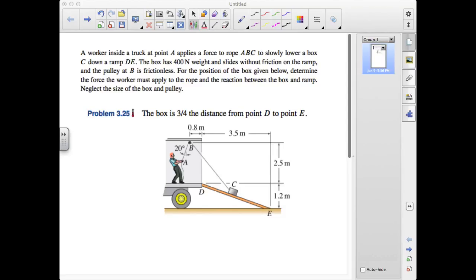We now try several additional problems from Chapter 3 to test our ability to solve particle equilibrium problems. The first problem we'll examine is Problem 3.25 where we're given a worker inside a truck exerting a force on rope ABC to slowly lower a box down a ramp.